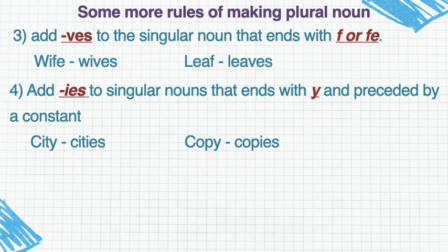अगर कोई noun में last में Y आएगा और Y के आगे का letter — second last letter — consonant होगा, vowel नहीं होना चाहिए. A, E, I, O, U के अलावा कोई letter है Y के आगे और last में Y, तो Y को हटा कर उसकी जगह पर हम IES रखेंगे. लेकिन last में Y आ रहा है और Y के आगे जो है वो consonant नहीं है मतलब vowel है, तो हम सिर्फ और सिर्फ S लगा देंगे, कुछ नहीं करेंगे.